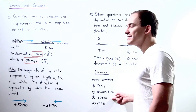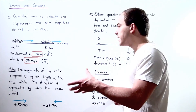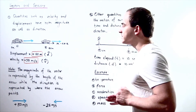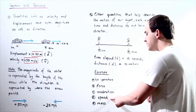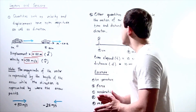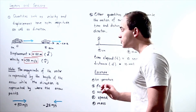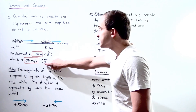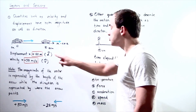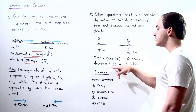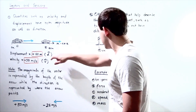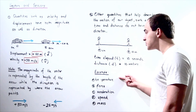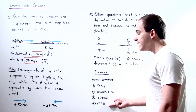What about speed and mass? Speed is defined as distance traveled divided by time elapsed. Both distance and time are scalar quantities, so speed is also a scalar — it only has magnitude. Speed is represented by the symbol V without an arrowhead, just as distance is given by the symbol d without an arrowhead. Mass, like speed, temperature, time, and distance, is also a scalar.